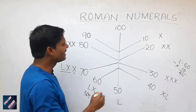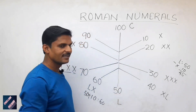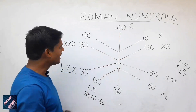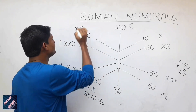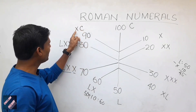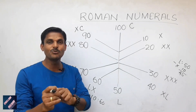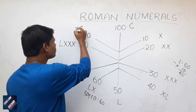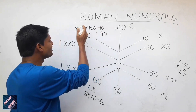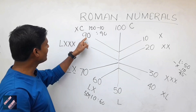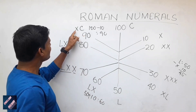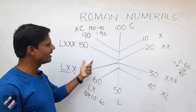What about 100? 100 is C — written as C in Roman numerals. What about 90? 90 is written as XC. Why? C is 100 and X is written before it. X is 10, so 100 minus 10 equals 90. When X is written before C, it shows that 90 is 10 less than 100.